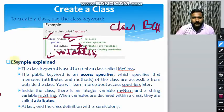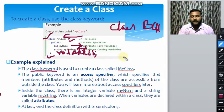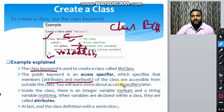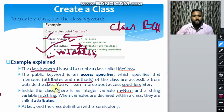The class keyword is used to create a class called myClass — the class keyword is very necessary. The public keyword is an access specifier which specifies that members, including attributes and methods of the class, are accessible from outside of the class. Inside the class there is an integer variable myNum and a string variable myString.